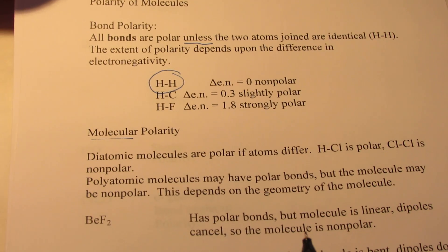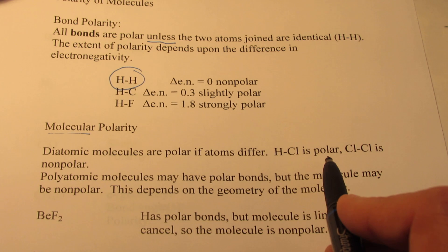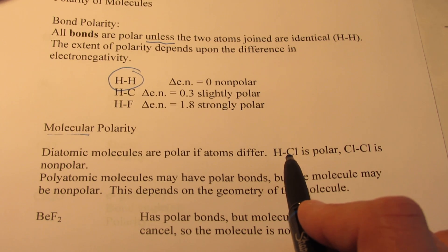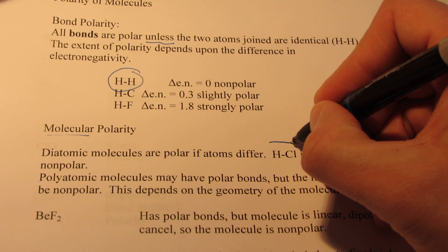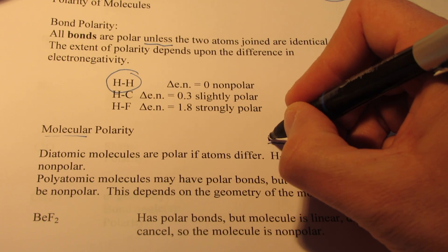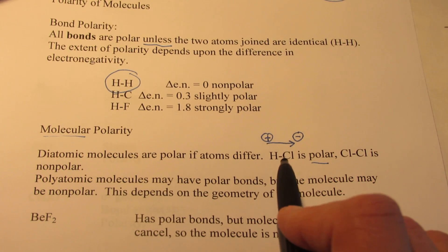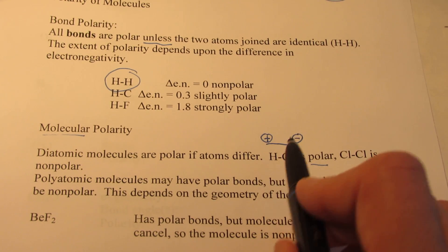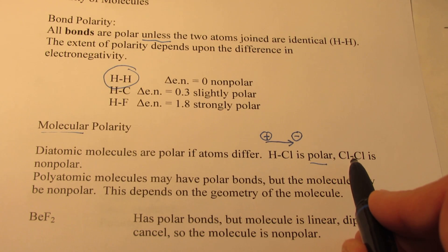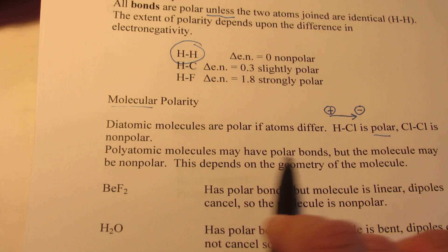Molecular polarity is something different. Diatomic molecules are polar if the atoms differ. H-Cl is a polar molecule — we have a polar bond and a polar molecule. Because that pair of electrons is not shared equally, we have a dipole. Chlorine has a higher electronegativity than hydrogen, so the chlorine side has a slight negative charge and the hydrogen side a slight positive charge — making it a polar molecule. Chlorine to chlorine, on the other hand, is nonpolar because that pair of electrons is shared equally, so there's no dipole. Polyatomic molecules may have polar bonds but the molecule may be nonpolar — that depends on the geometry.